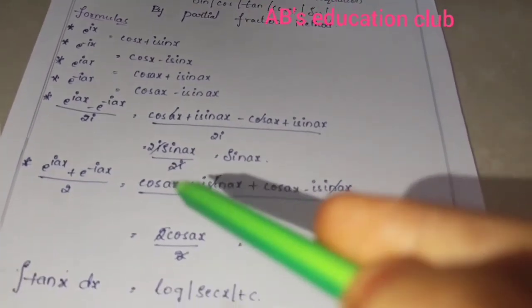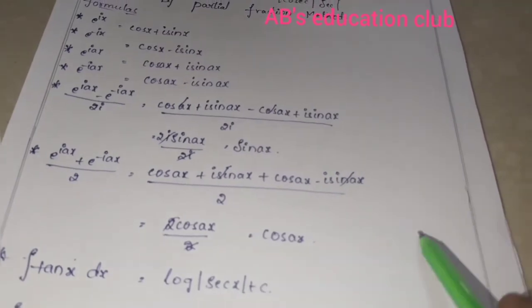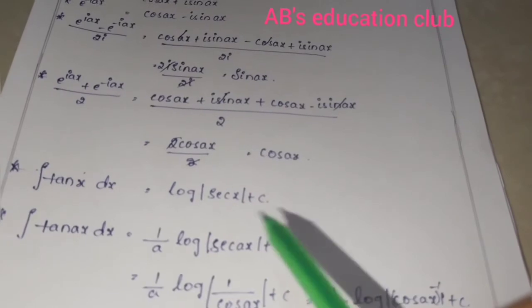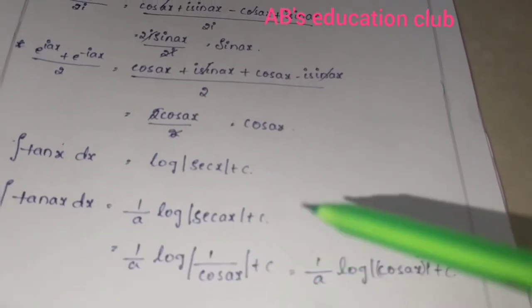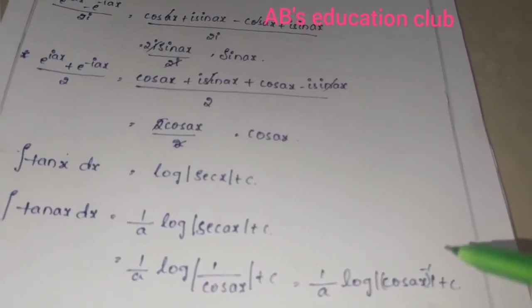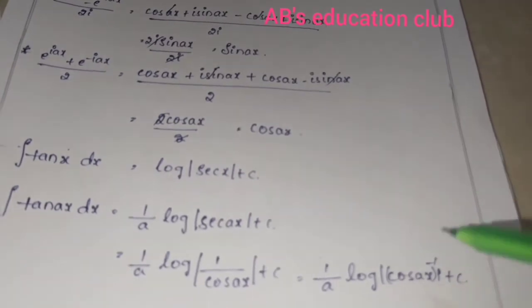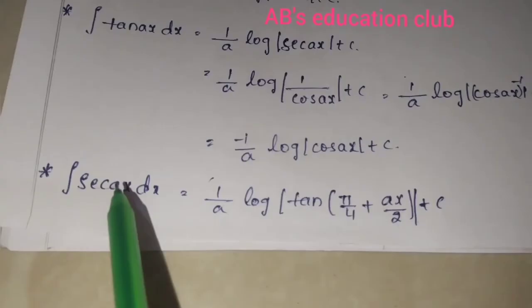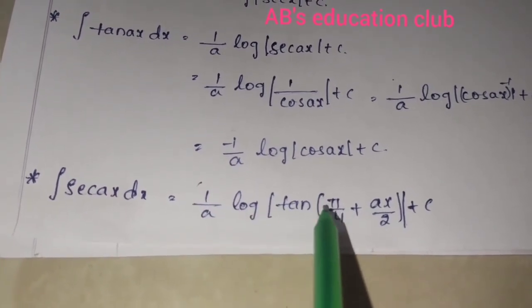Integration formulas needed: ∫tan(x)dx = log|sec x| + c. Since sec x = 1/cos x, this equals −log|cos x| + c, using the log identity log(a^m) = m·log(a). Also: ∫sec(x)dx = log|tan(π/4 + ax/2)| + c.